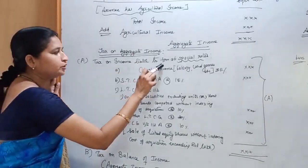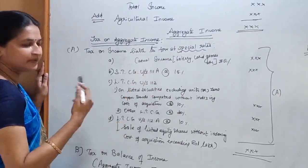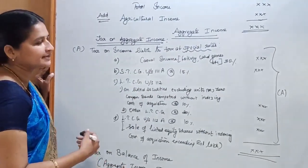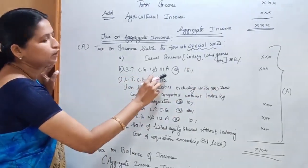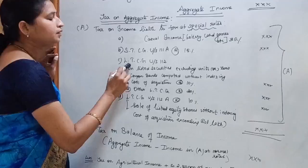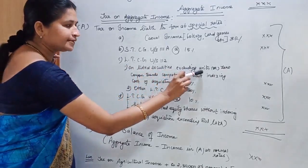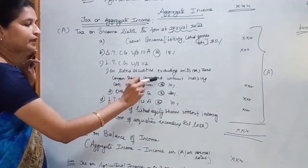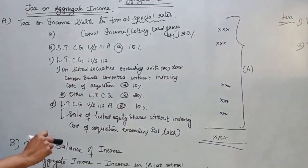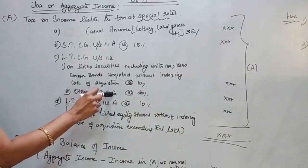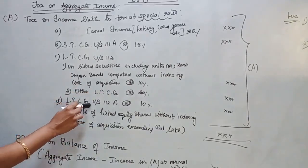Tax on income liable to tax at special rates includes: winnings from lottery, card games, races, etc. — the tax rate is 30%. Short-term capital gain under Section 111A — the rate is 15%. Long-term capital gain under Section 112 on listed securities excluding units or zero coupon bonds, computed without indexing the cost of acquisition — the rate of tax is 10%. For other long-term capital gains, the rate of tax is 20%.